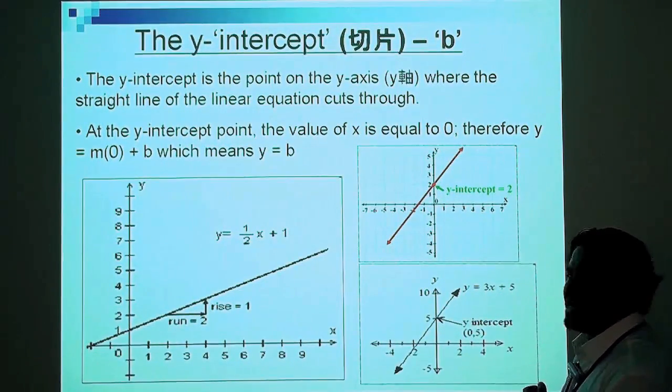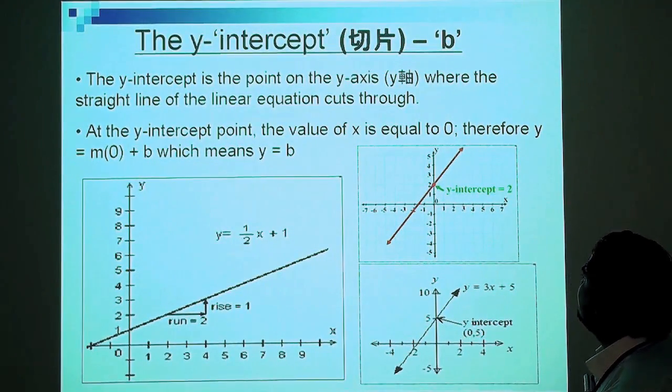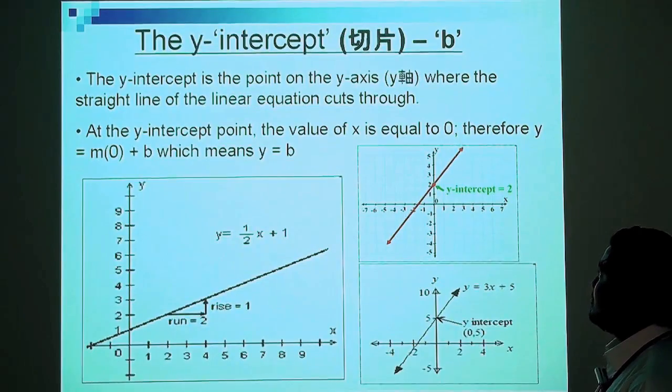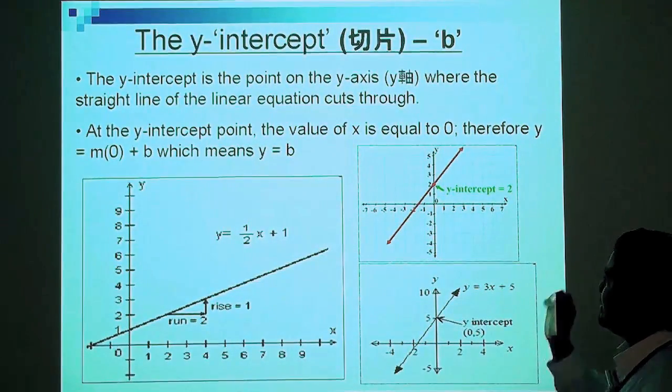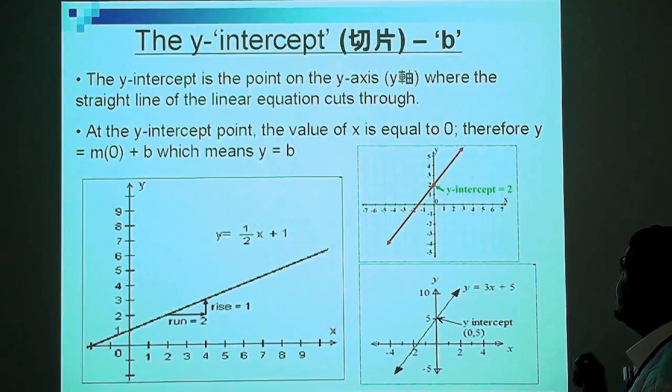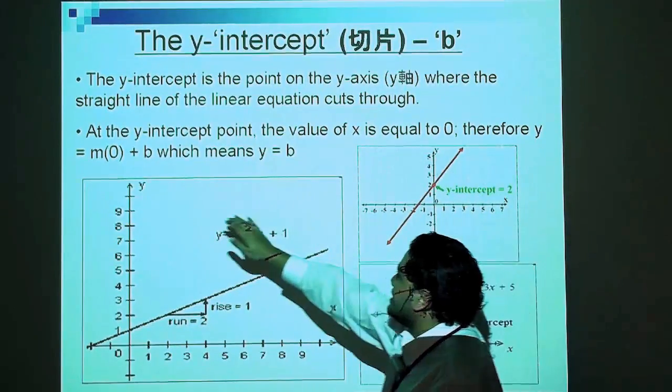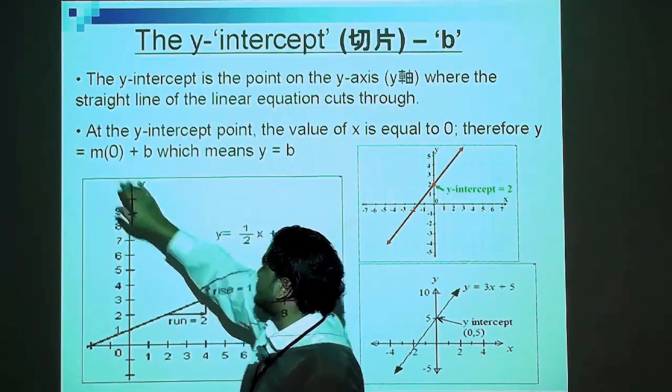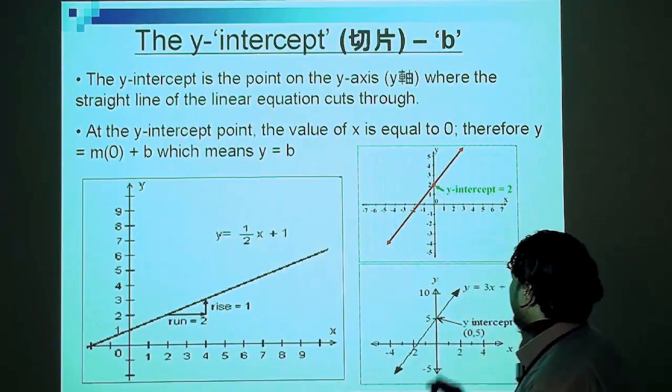The other key feature of a linear equation is the y-intercept, b. The y-intercept is a point on the y-axis where the straight line of the linear equation cuts through. At the y-intercept point, the value of x is equal to 0. Therefore, as proof, if y equals mx plus b and you substitute 0 for x, you find out that y is actually equal to b.